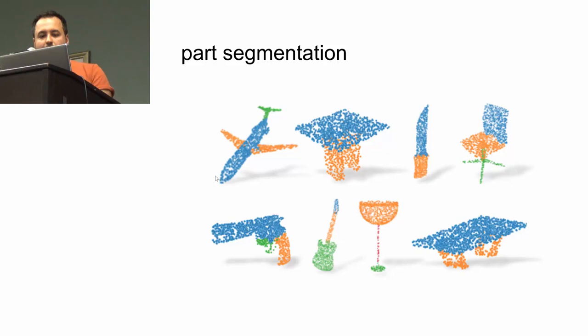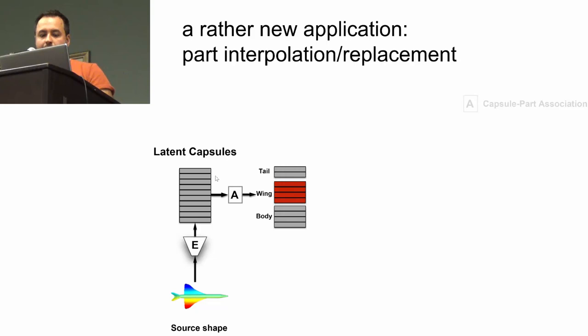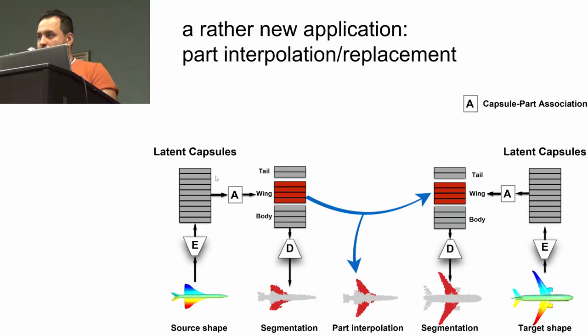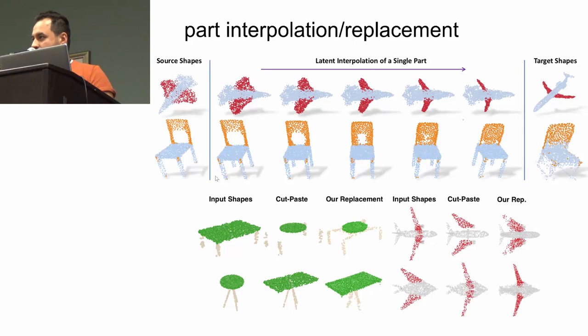Then we can do other applications now because we have a rich latent space. It's not like typical features. What we can do is take a source shape and get its parts, and then take a target shape and get its parts. Now we know the association between the wings because we have them in the latent space. We can control them. If I just switch the capsules for the wings, I'm actually ending up with two planes—the parts are flipped in a consistent and globally coherent way. That looks like that. It's really fine in that sense.